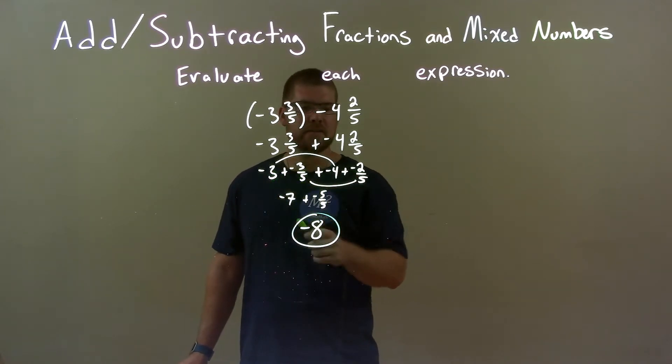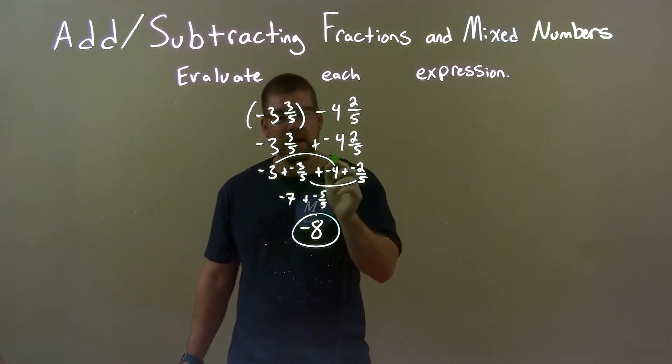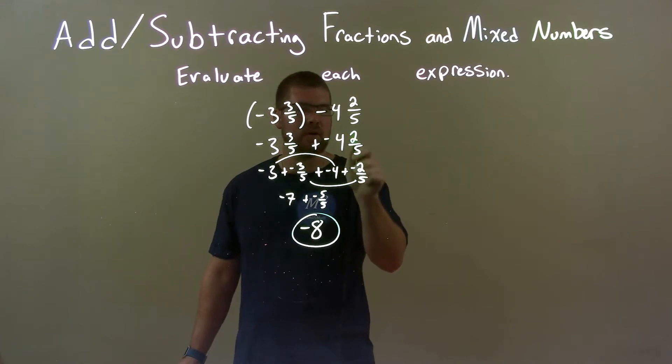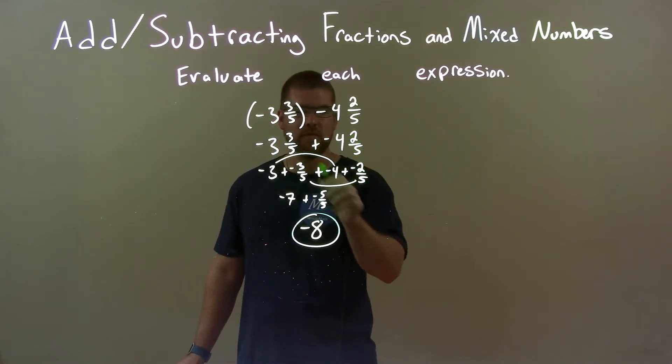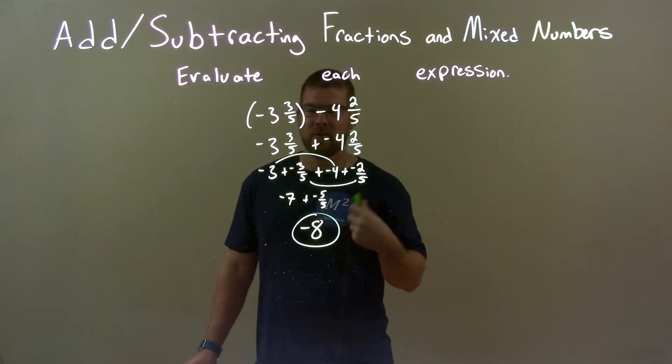The whole numbers and the fractions. Now make sure when you do that, especially with a negative, the negative also goes to the fraction part, the negative 2 fifths and the negative 3 fifths. It allows me to see